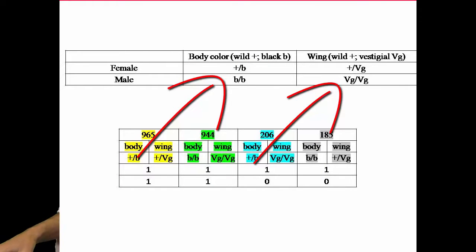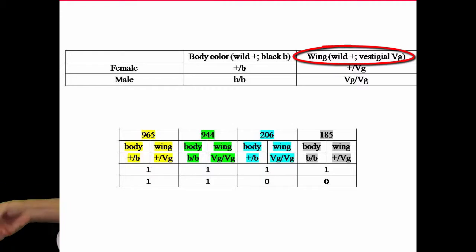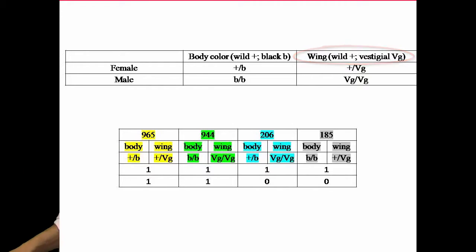In the body color, it'll be wild type as the dominant and black body as the recessive. And then in the wing, it'll be a wild type and a vestigial type. The vestigial is kind of a stubby wing. The female is going to have a dominant body color with a recessive black gene, and the male is going to have two recessive genes.